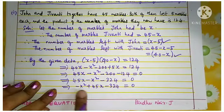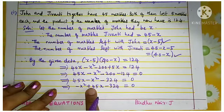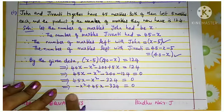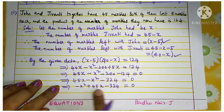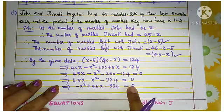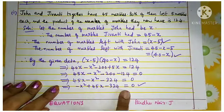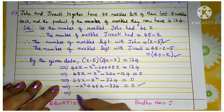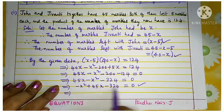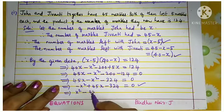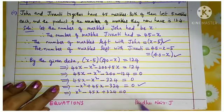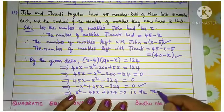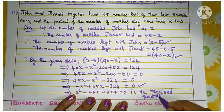Writing in standard form: minus x squared plus 45x minus 324 equal to 0. Multiplying throughout by minus 1 gives x squared minus 45x plus 324 equal to 0. This is the required quadratic equation.